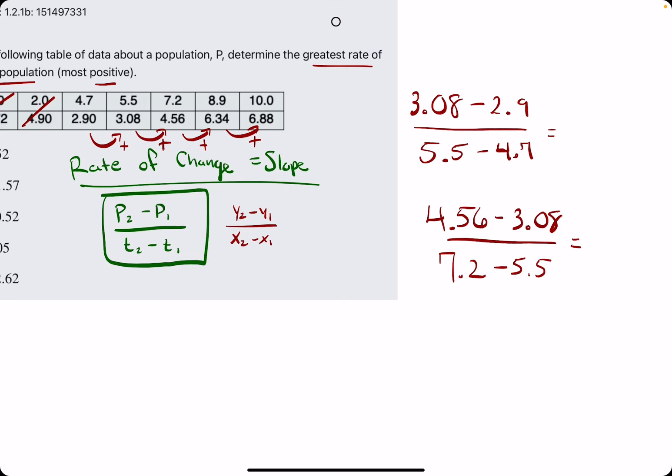And then the slope between 7.2 and 8.9, we have 6.34 minus 4.56 all divided by 8.9 minus 7.2.